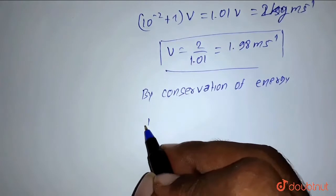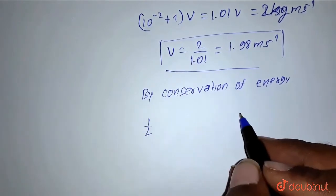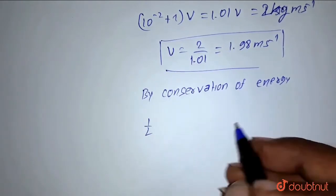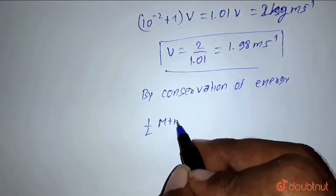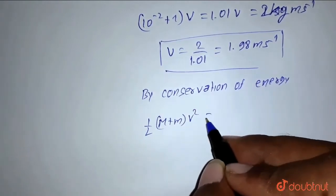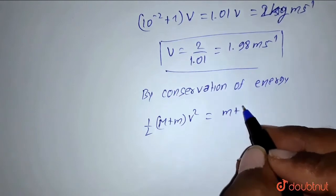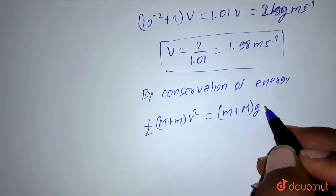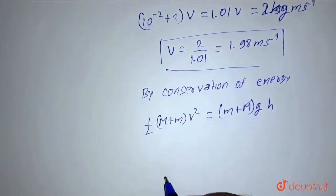Kinetic energy equals potential energy at the highest point. So ½(m + m)V² = (m + m)gh. The masses cancel out.